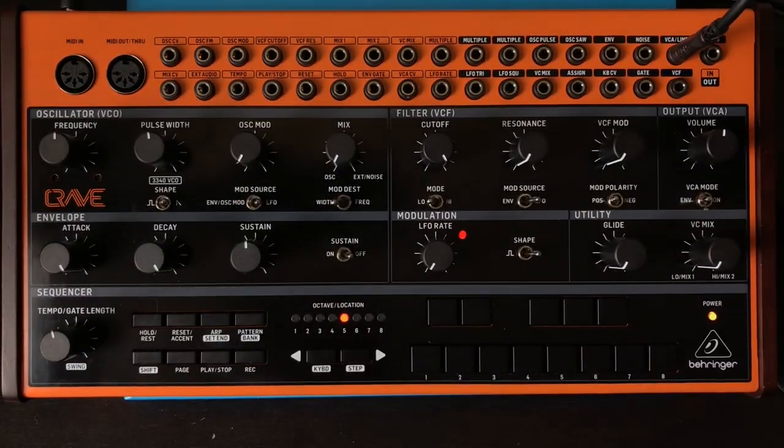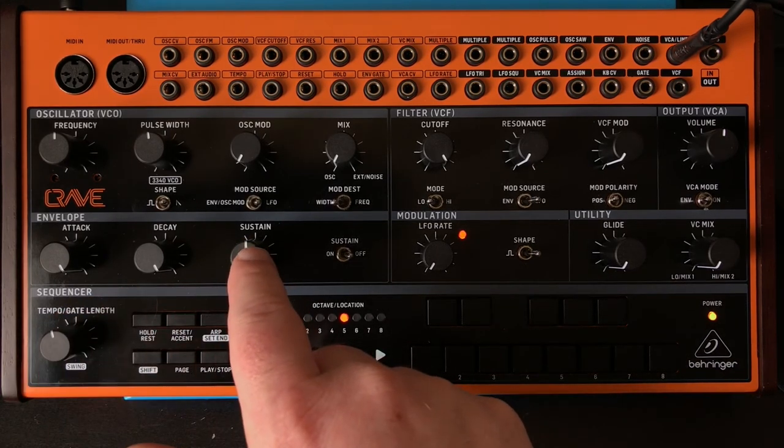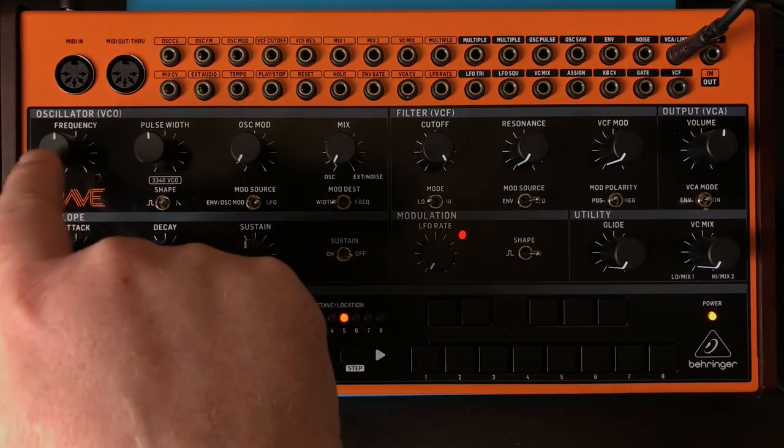Okay, so hopefully that simple explanation of how these four little sections work is helpful and clears some things up. And in our next one, we'll talk about how that can be used to modulate things like pulse width, the oscillator pitch, and the cutoff knob.